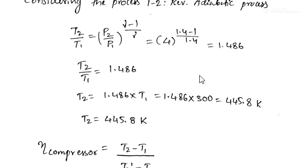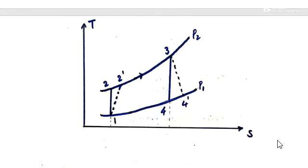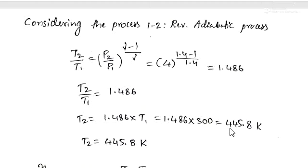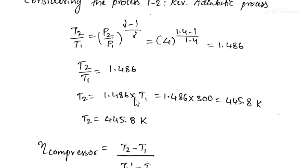To find T2, we consider the isentropic process 1-2, which is reversible adiabatic compression. For an isentropic process, T2/T1 = (P2/P1)^((γ−1)/γ). With pressure ratio 4 and γ = 1.4, the exponent is (1.4−1)/1.4. Simplifying gives T2/T1 = 1.486, so T2 = 300 × 1.486 = 445.8 K.